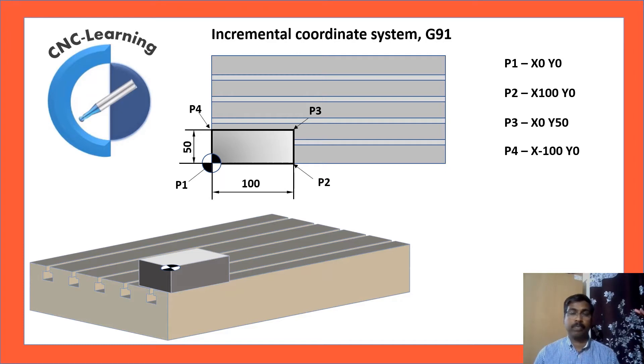Now, P4. Now, P4, how it is calculated? For P4, P3 is the reference. So, P3, if P3 is zero, P4 would be X-100 and Y0. Because in Y-axis there is no distance. The distance is only in X but in minus direction. And suppose the tool has to come back to original position. Then, P1 again would be X0, Y-50. Because in X-axis, for P1 here, the previous coordinate is P4. And the distance in Y-axis is 50 in minus direction. X-axis, there is no distance. So, P1 is X0, Y-50.